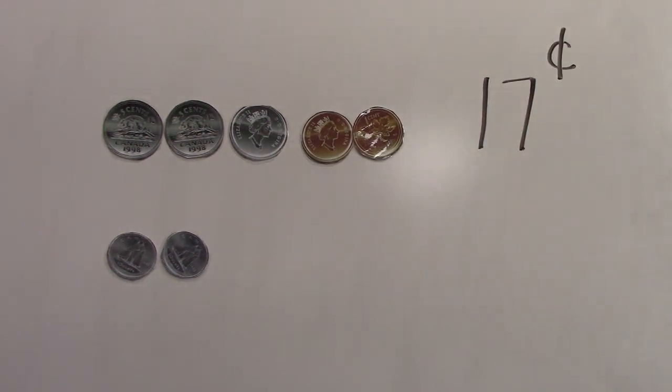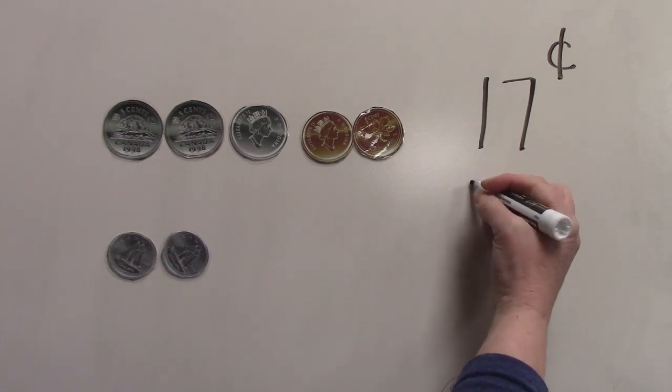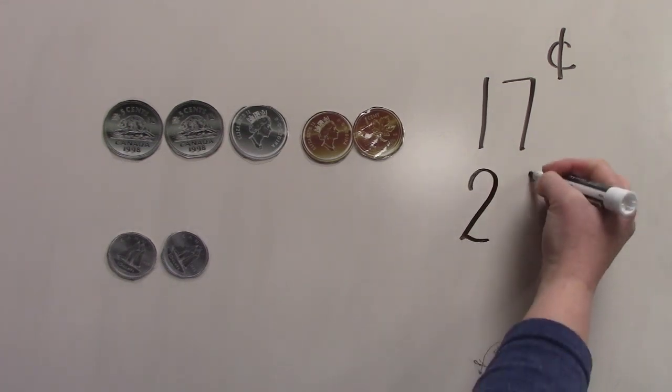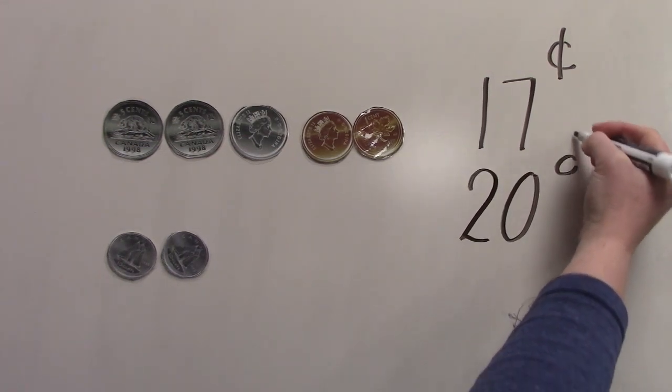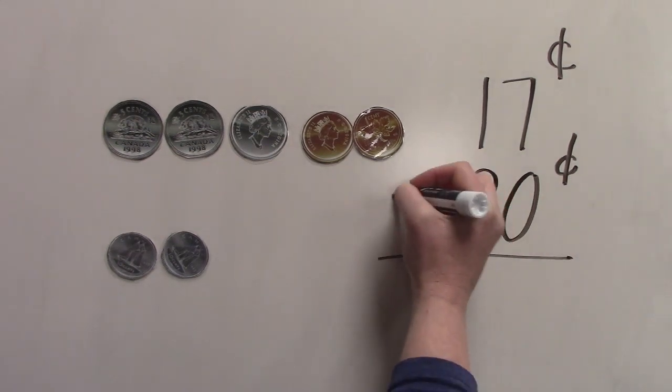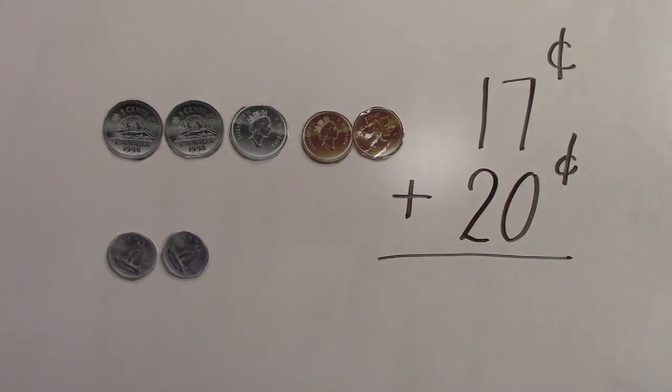Now let's count the next row. These are dimes. 10, 20. So now we have 20 cents. We're going to add these two numbers together so we can see how much money we have all together.